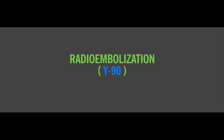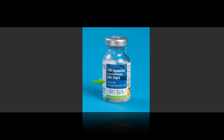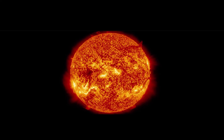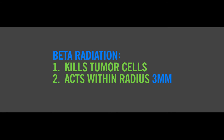Moving on to Y90 radioembolization. Y90 is the cooler, more athletic kid brother of chemoembolization. If you can understand chemoembolization, you can pretty much figure out radioembolization. The only difference is that the Y90 particles are not coated with chemotherapy. Instead, the Y90 is the treatment agent itself, and it emits beta radiation. All radiation means is that a substance emits energy — Y90 emits a very specific form of energy that kills tumor cells dead and acts locally, with a radius of about 3 millimeters in 3D space.